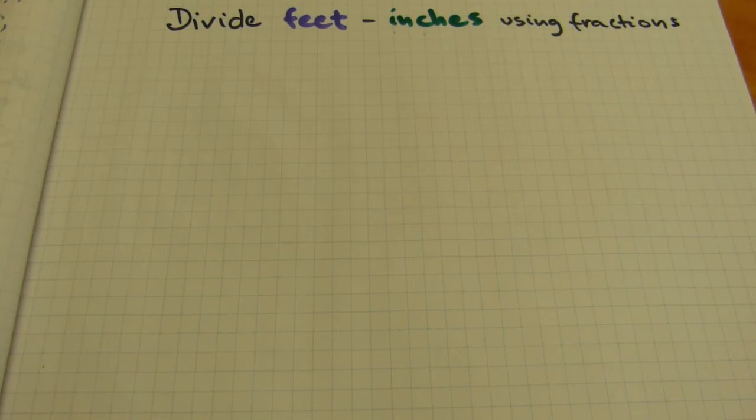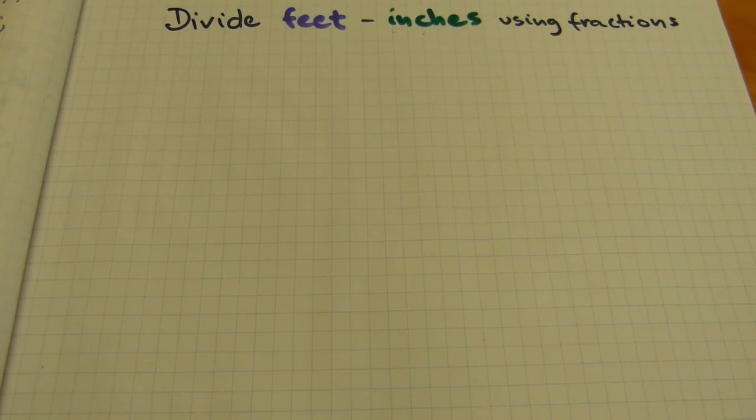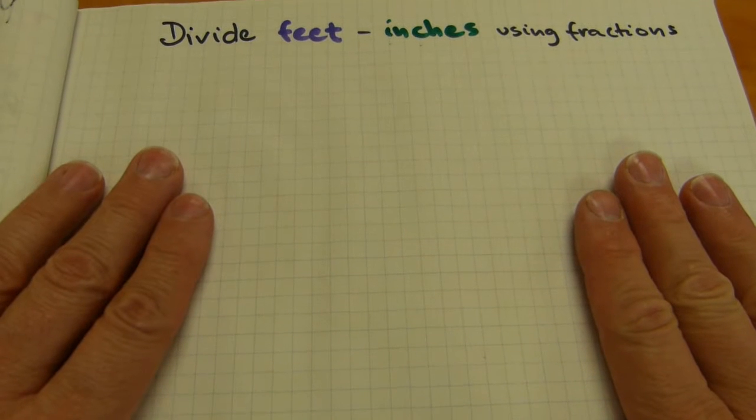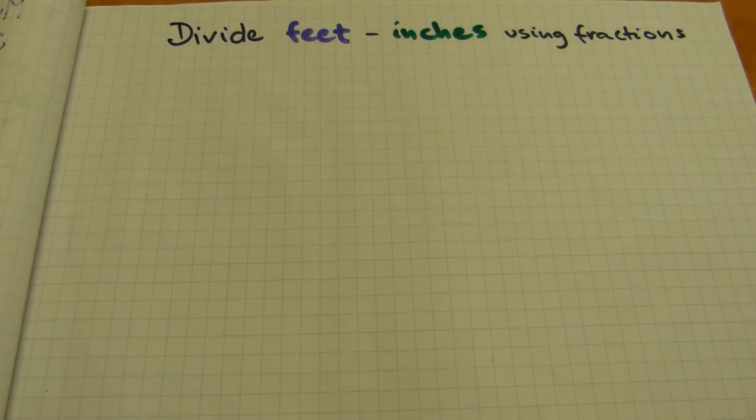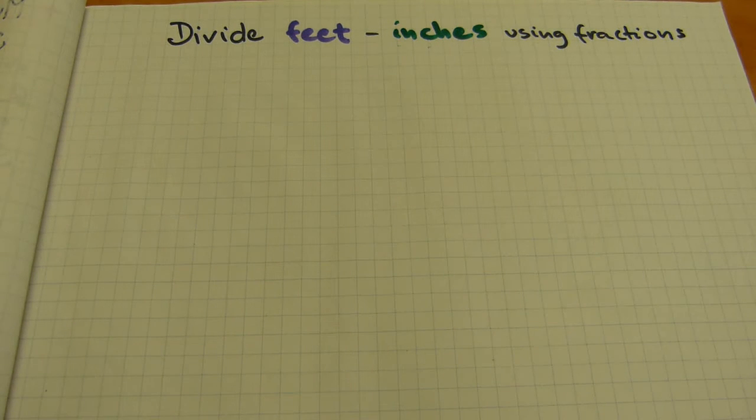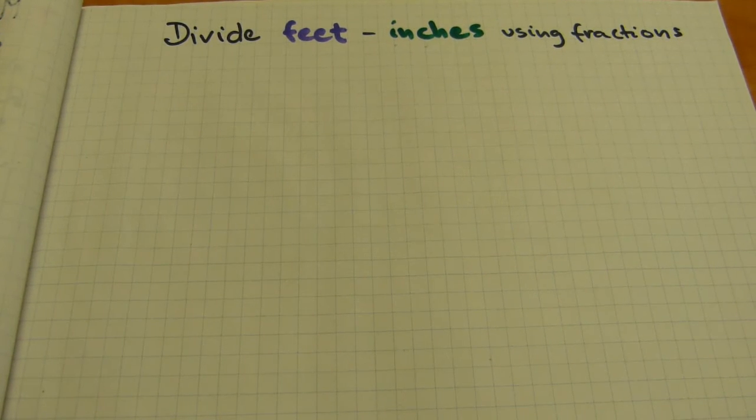Sometimes a longer measurement in feet and inches needs to be divided by a whole number. Such is the case for stair making or finding even shelf spacing or laying out post locations across an entire building so that it's neatly and evenly divided. So we're going to do that with feet and inches using fractions, and as usual I'm going to have three sample calculations: one easy, another one intermediate, and the third one more involved.